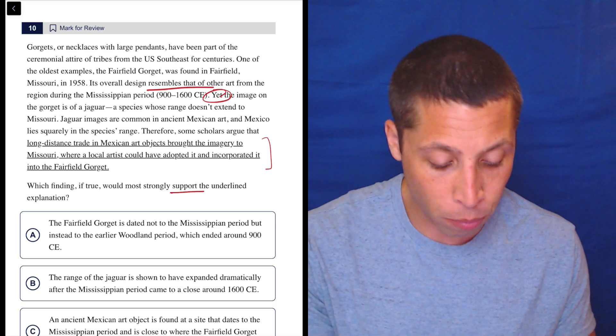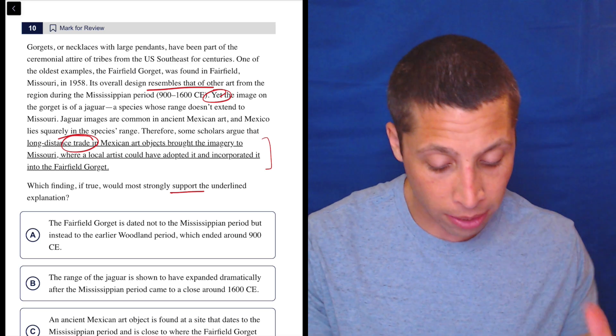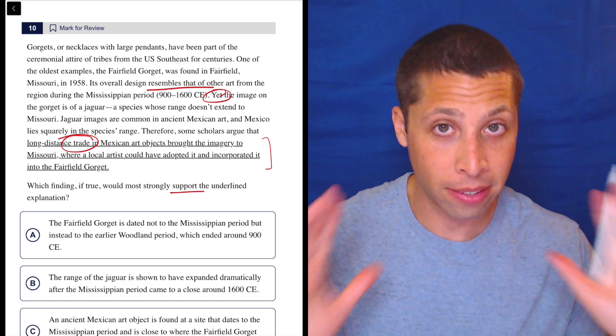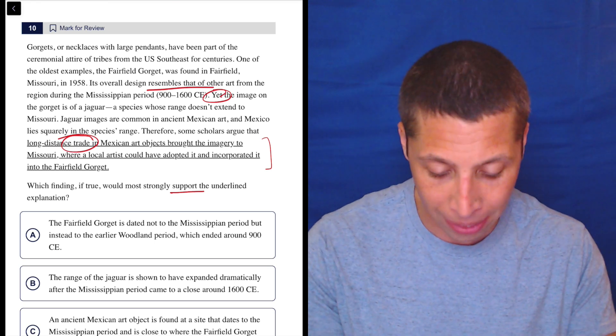So we need to support that. What are we really supporting? There's some sort of trade, right? It's the long-distance trade between these two places. That's the key because that's the only way that someone in Missouri knows what a jaguar is.